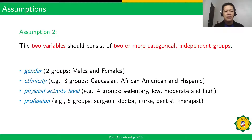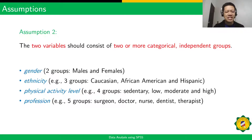For the second assumption, the two variables should consist of two or more categorical independent groups. For example, gender has two groups, ethnicity has three groups, physical activity level has four groups, and profession has five groups.